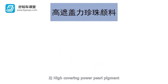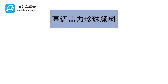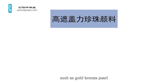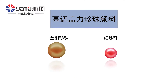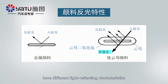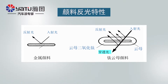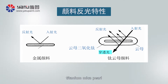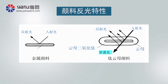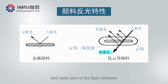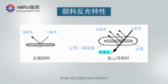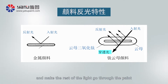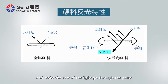The second is high-covering power pearl pigment — opaque pearl master batch, such as gold bronze pearl and red pearl, which have different light-reflecting characteristics from aluminum pigment. Titanium mica pearl can reflect light, making part of the light reflected from the pigment surface and the rest pass through the paint.